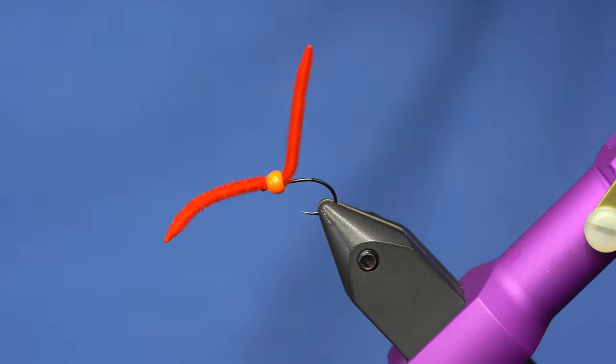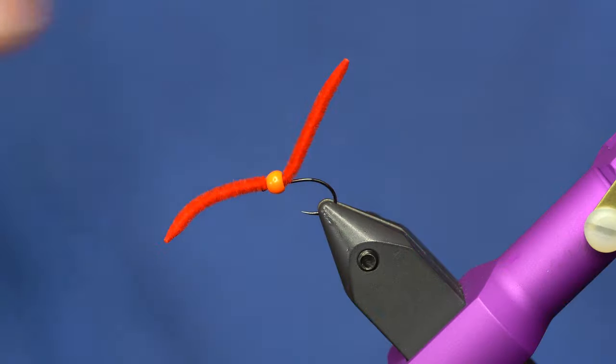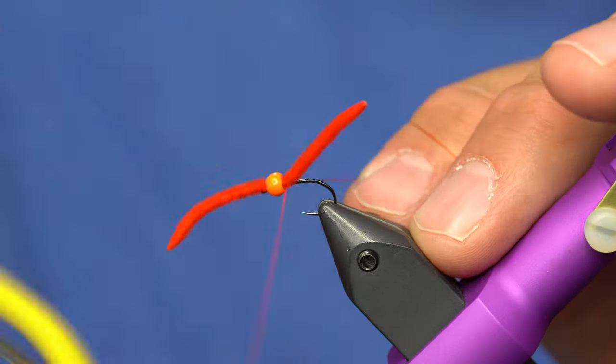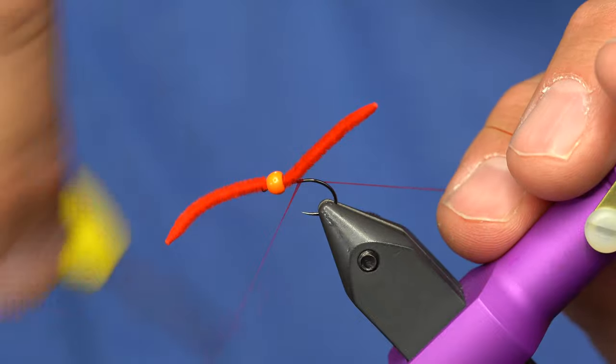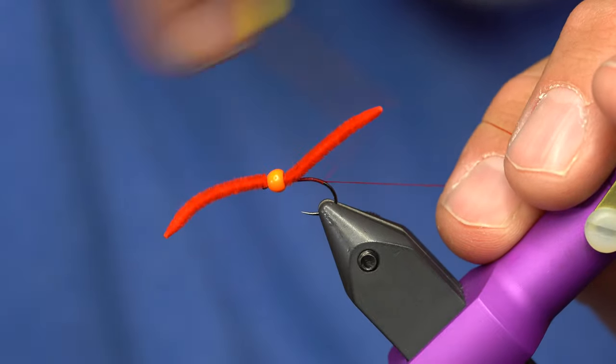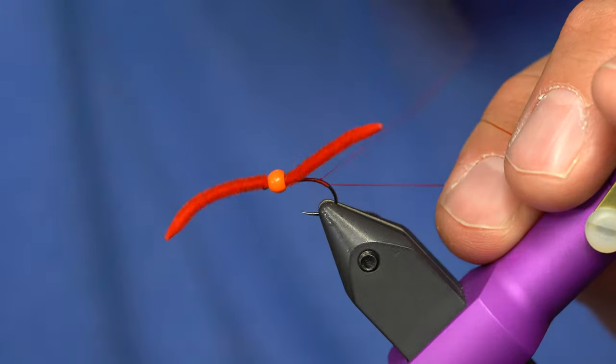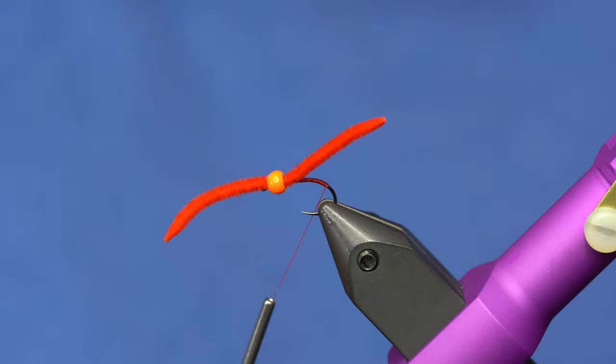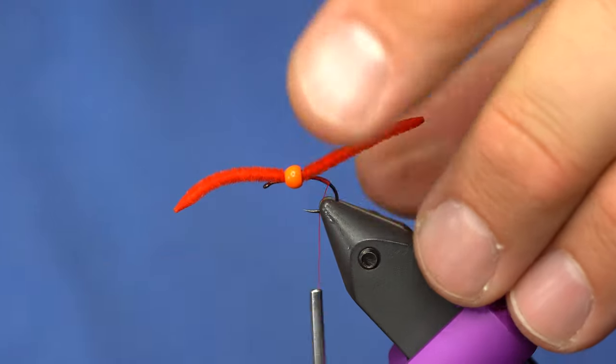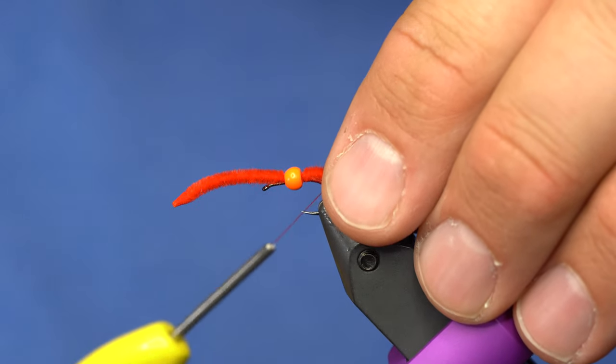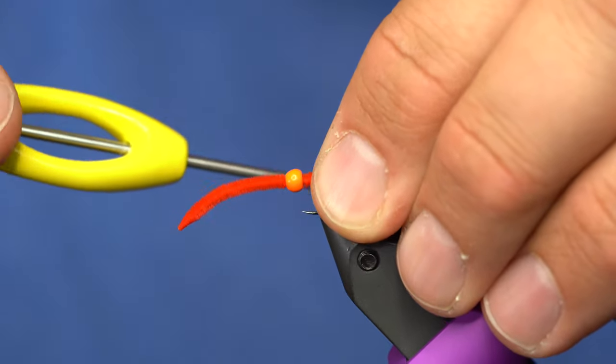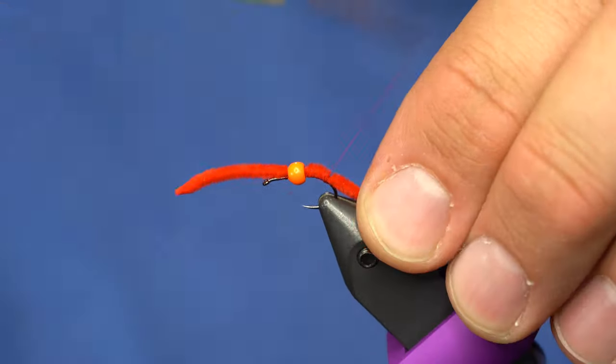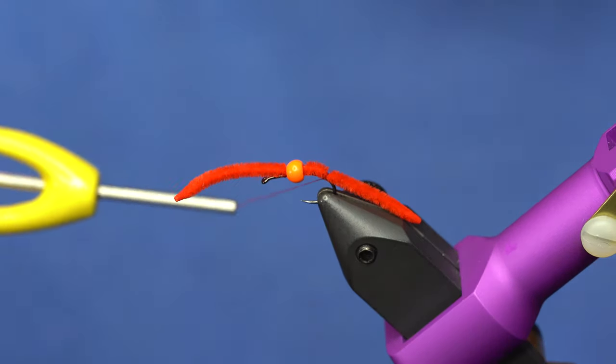Now the singey singe is done and I'll just take some 70 denier thread and wrap this on at an angle. We'll build up a nice base here. All right, so I'm going to want my bead to end up about right there. So I'll use a pinch wrap to wrap this around, and I'll do like three or four wraps right in the same spot.